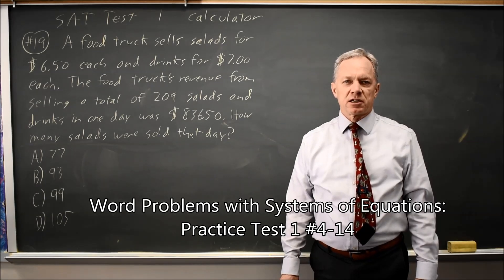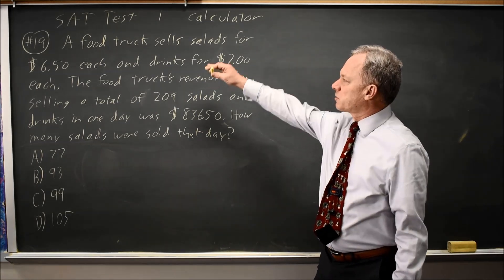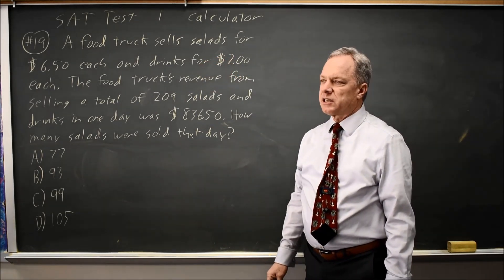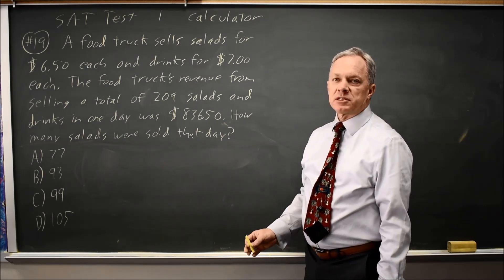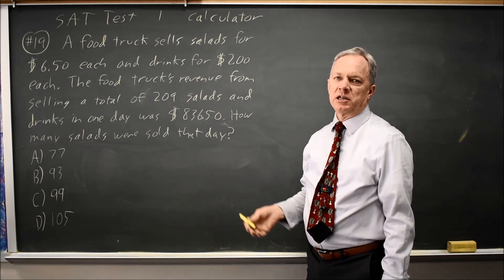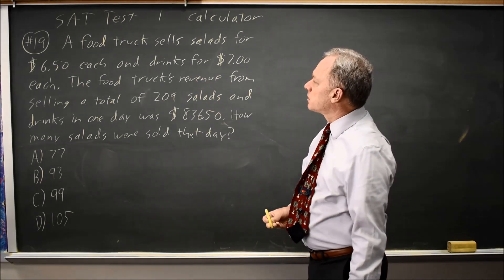This is SAT Test 1, Calculator Question Number 19. We have a system of equations here, as we'll see shortly. They're asking about a food truck selling salads and drinks, and they give you two statements about the numbers of salads and drinks. We have two statements about the same two quantities. Typically, that's intended to be a system of equations. So let's take a look at it.